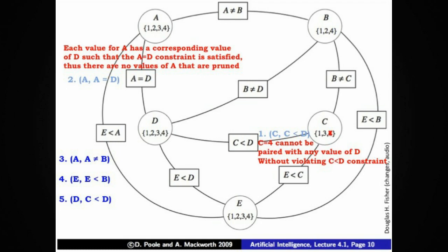Here are three more examples. What are the implications of a not equal to b on variable a? What are the implications of e less than b on variable e? What are the implications of c less than d on variable d? Go ahead and think about those, and then we'll address those three additional constraints in a moment.